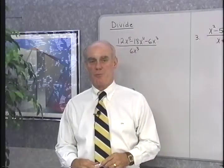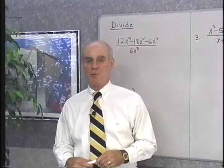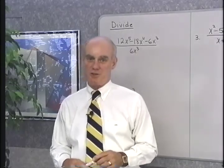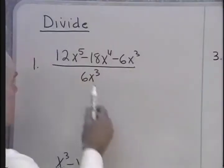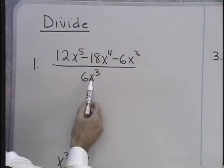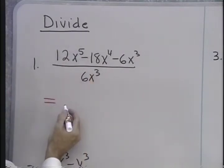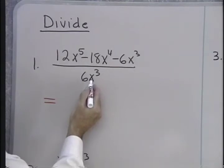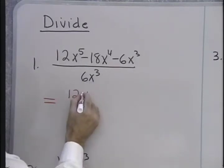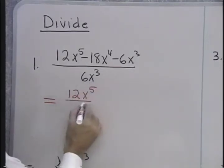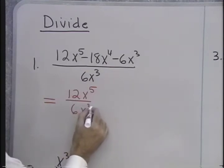Now, we want to look at division with polynomials, and some of it will look very similar to what we did when we reduced rational expressions to lowest terms. Here, I have this polynomial divided by 6x cubed. The instructions are divide. Now, I'm going to use something similar to the distributive property when I divide by a monomial, and simply write each term in the numerator over that denominator.